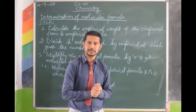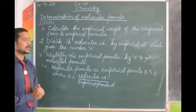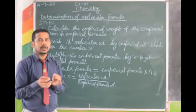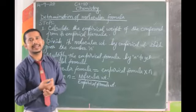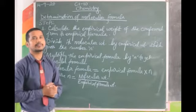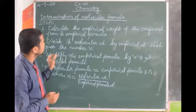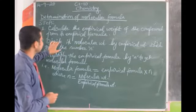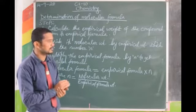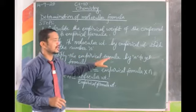So how to determine molecular formula — there are steps. Number one: calculate the empirical weight. You must know the empirical formula, then find the mass of the atoms present in the empirical formula — that is its empirical formula mass. Number two: divide its molecular weight by empirical formula weight, which gives the number N.